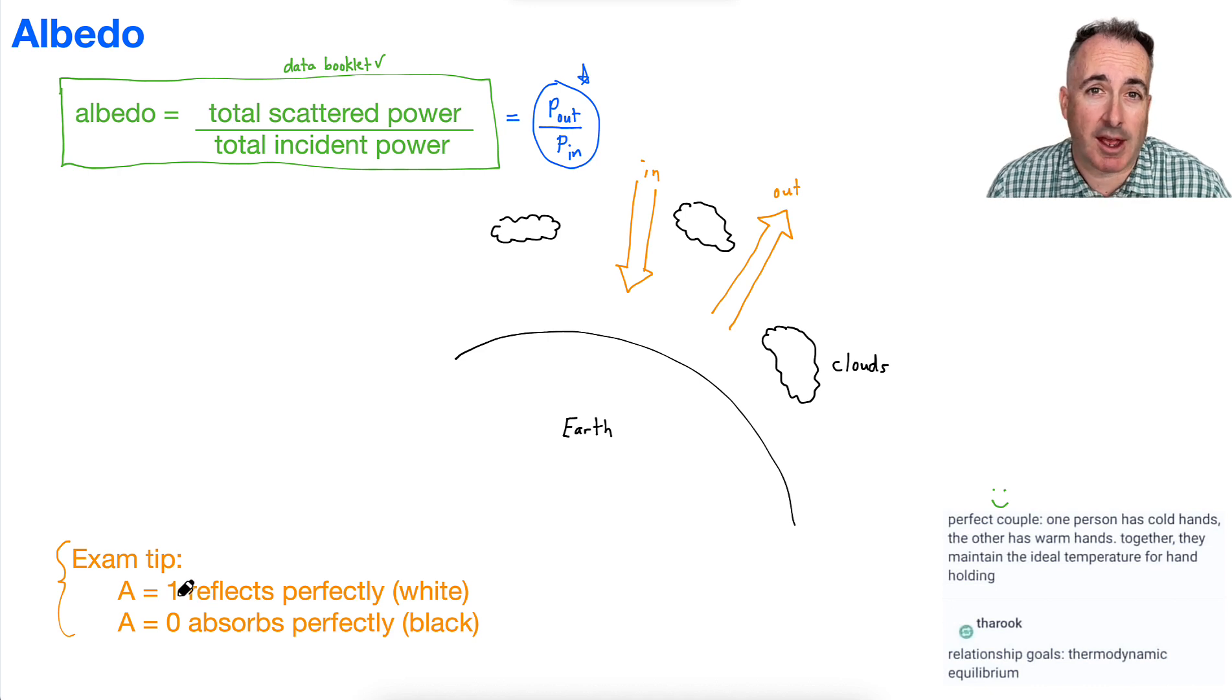By contrast, something with an albedo of zero, for example, is something that absorbs perfectly. So, for example, the light that comes in, it just all gets absorbed, and nothing gets bounced back out again. So that means then it must be very, very black or very dark.